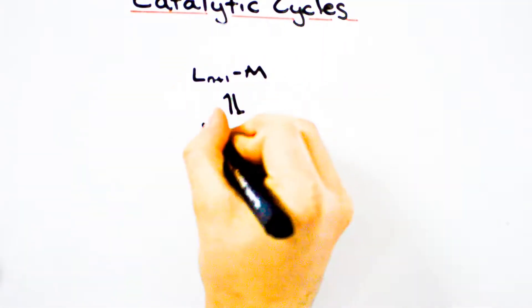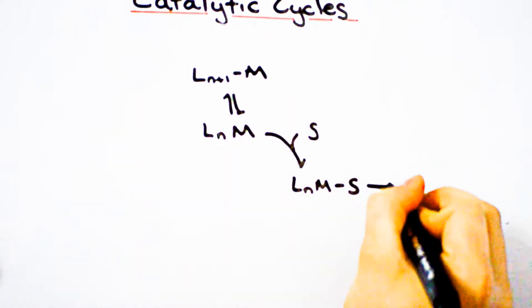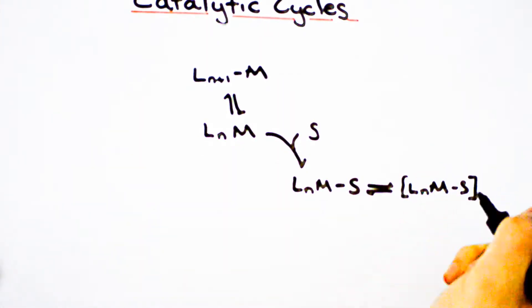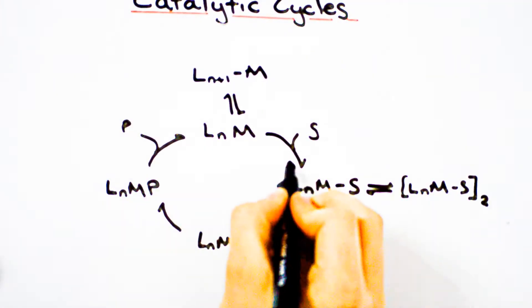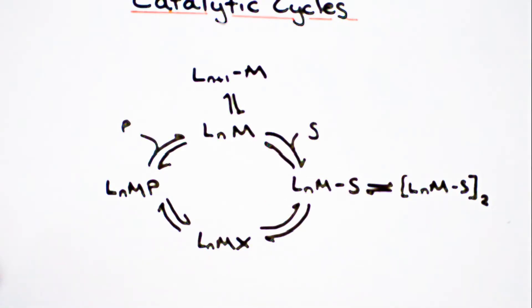Consider the hypothetical reaction here. The metal binds the substrates S, forms a transition state X, and finally forms the product P, which dissociates to regenerate the active catalyst.